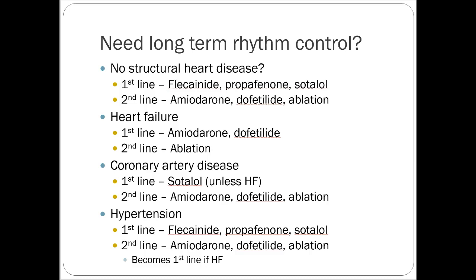For rhythm control long-term, the choice of drug depends on comorbidities. With no structural heart disease, first-line options are flecainide, propafenone, or sotalol; second line is amiodarone or dofetilide. For heart failure, amiodarone or dofetilide first line, ablation second line. For coronary artery disease, sotalol is preferred — unless they also have heart failure, in which case amiodarone or dofetilide. For hypertensive patients, flecainide, propafenone, or sotalol first line; second line amiodarone or dofetilide. You can use class 1 agents somewhat, but class 3 agents are generally preferred.